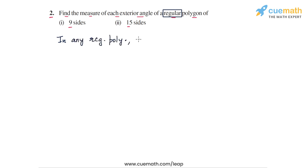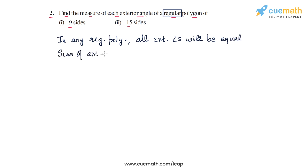For a regular polygon, we can directly make use of the fact that each of the exterior angles will be equal. So in any regular polygon, all the exterior angles will be equal. We will also use the fact that the sum of the exterior angles in any polygon — not just a regular polygon, but any polygon — must be equal to 360 degrees.